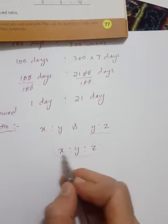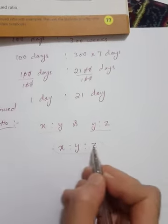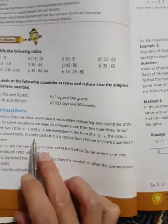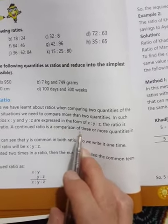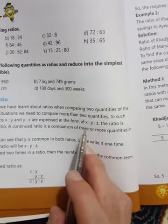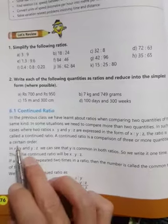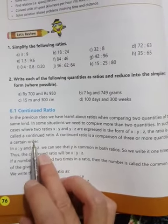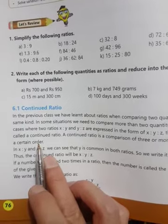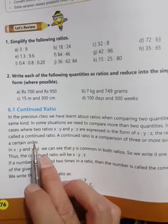A continued ratio is a comparison of three or more quantities in a certain order. Order means arrangement - we must pay attention to the sequence.